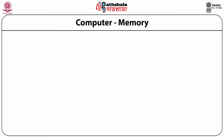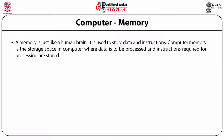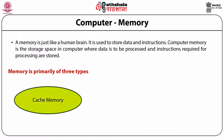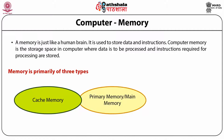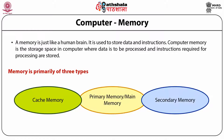Computer memory is just like a human brain — it is used to store data and instructions. Computer memory is a storage space in the computer where data to be processed and instructions required for processing are stored. There are three categories of memory: cache memory, primary memory (or main memory), and secondary memory.